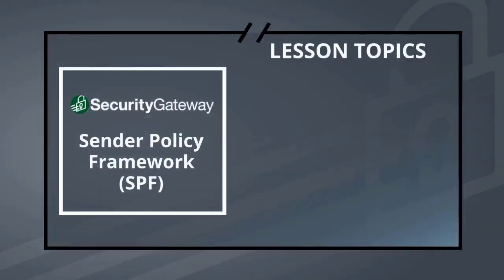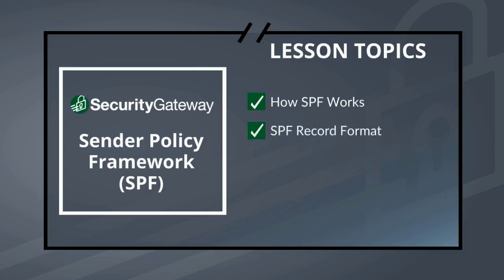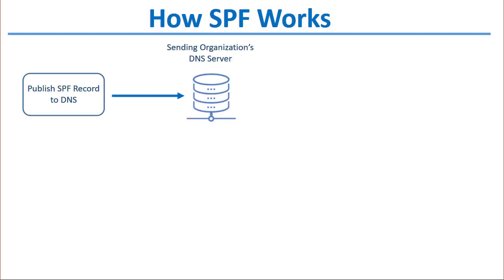This lesson covers how SPF works to help protect your mail server from emails with spoofed addresses, the format of the SPF record published to DNS, and SPF verification settings in Security Gateway. The sending organization publishes an SPF record to DNS indicating what servers are allowed to send mail for the company's domain — for example, the mail server, any gateways, or other devices sending on behalf of your domain.